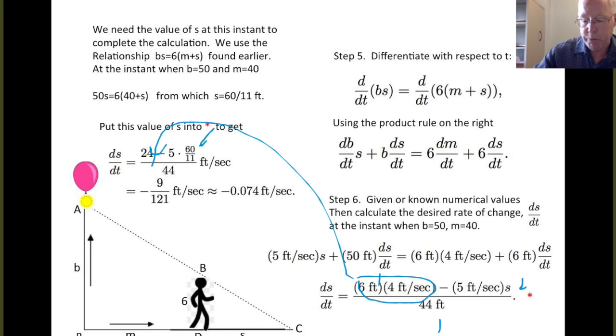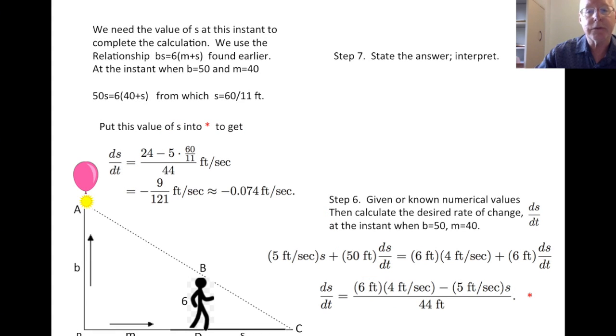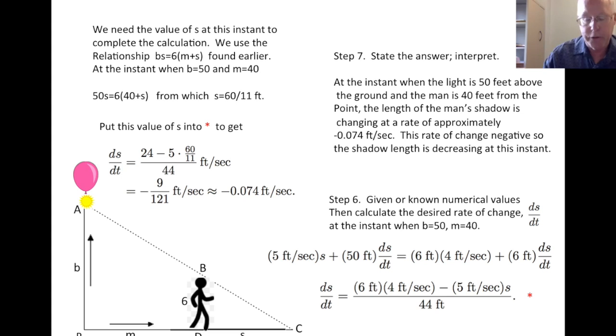So to finish off, we want to just interpret or summarize our answer. That's step 7. So what does this all mean? So we've now answered our question at the instant when the light is 50 feet above the ground and the man is 40 feet from the point P. The length of the man's shadow is changing at a rate of approximately minus 0.074 feet per second. This rate of change is negative, so the shadow length is decreasing at this instant. So at this instant, as the man walks away from P, his shadow gets shorter. And that's the end of the story.